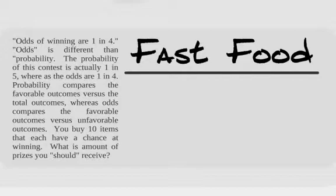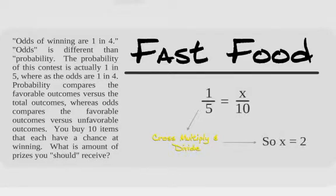So if you buy 10 items, what is the total amount that you should receive if you buy 10 items? Well, if you think about it, there's one winner to five total and you want to buy 10 items. How many winning prizes should you have? Theoretically, that's why we call it the theoretical. What should happen? Not actually what happens, but what should happen? Well, this is like any other proportion we've done in the past. We cross multiply and divide X equals two. So theoretically, if you buy 10 items for you and your family members, you should get two prizes.